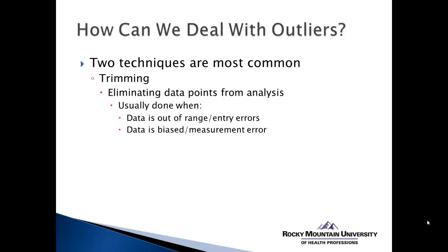The next reason is if we feel the data is biased through measurement error. Perhaps there was a measurement error in individual data points that were collected, or maybe in a series of data points there was some sort of measurement error — maybe the measurement tool wasn't used correctly, or maybe the equipment used to measure a certain variable was not calibrated. If we suspect any measurement error or that the data was biased in some way, that's another reason we could trim the data.